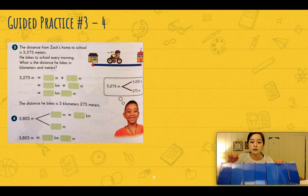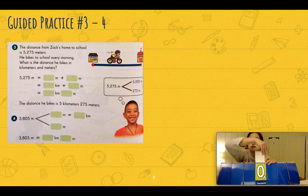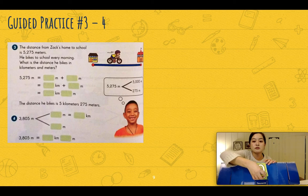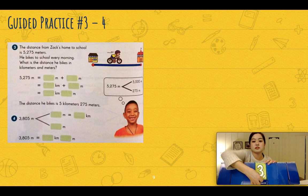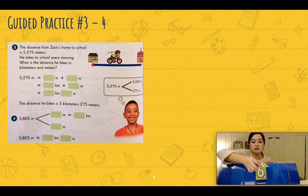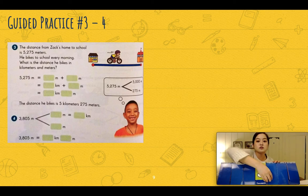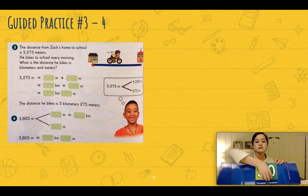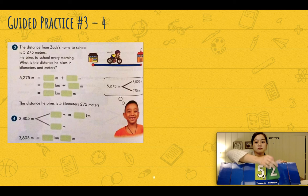We have our thousands place. We need five thousand, and then two hundred, and then seventy-five.